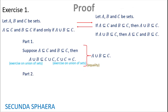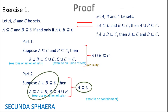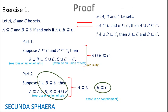For the second part, suppose that A∪B is contained in C. There are exercises on union that will be used: A is contained in A∪B, and B is contained in A∪B. By an exercise on containment and our initial supposition that A∪B is contained in C, we have that A is going to be contained in C and also that B is going to be contained in C. Using the conjunction logic step, A⊆C and B⊆C is the result. This concludes the proof.